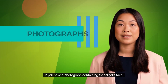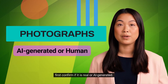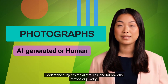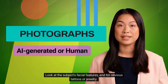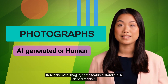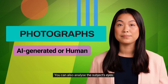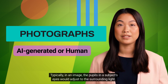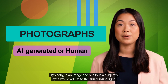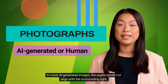If you have a photograph containing the target's face, first confirm if it is real or AI generated. Look at the subject's facial features and for obvious tattoos or jewelry. In AI generated images, some features stand out in an odd manner. You can also analyze the subject's eyes — typically in an image, the pupils would adjust to the surrounding light. In most AI generated images, the pupils would not align with the surrounding light.